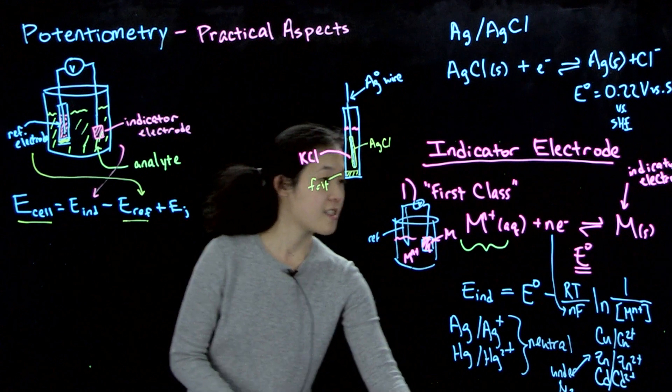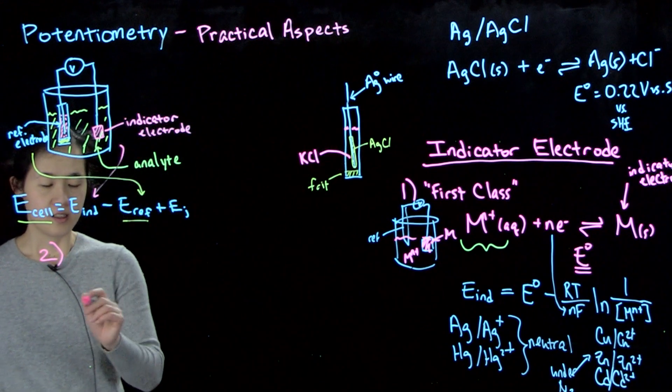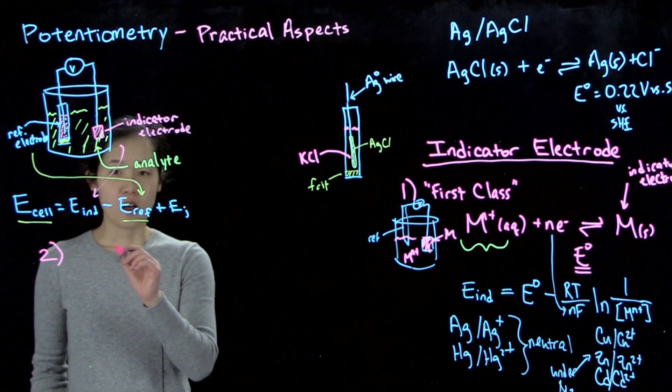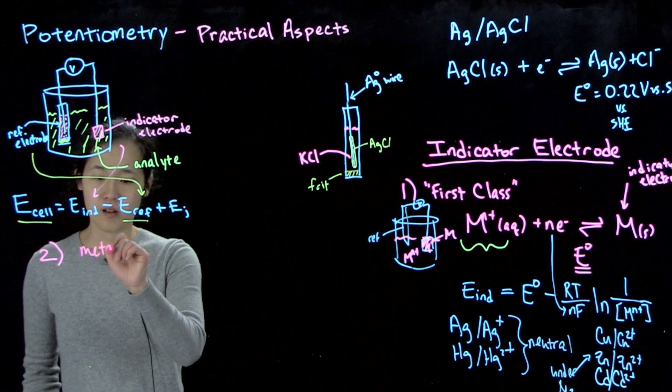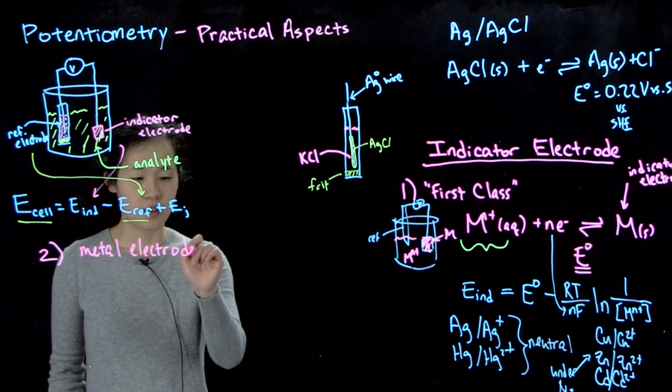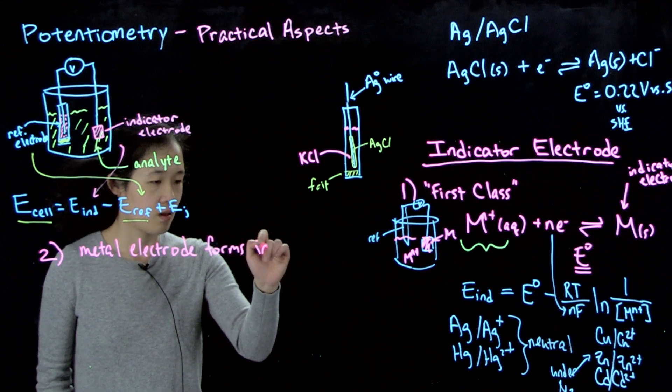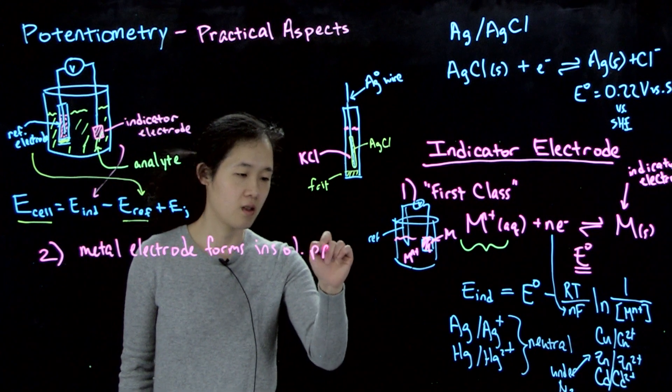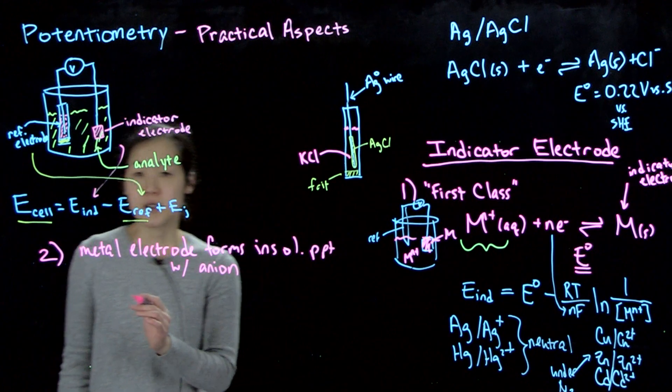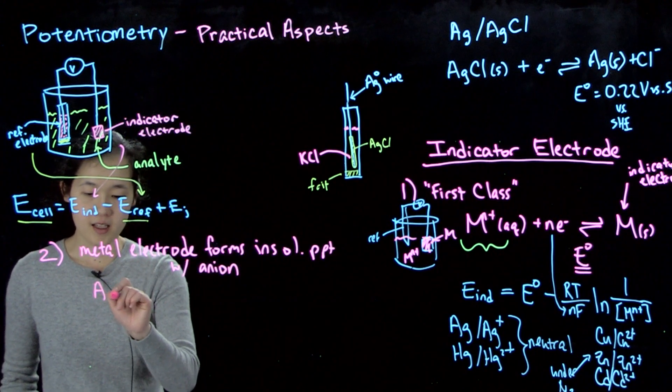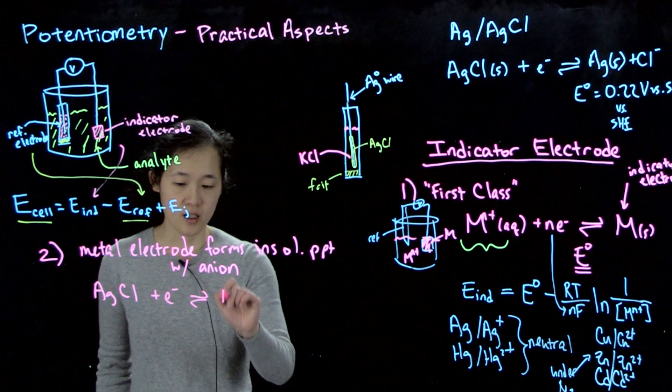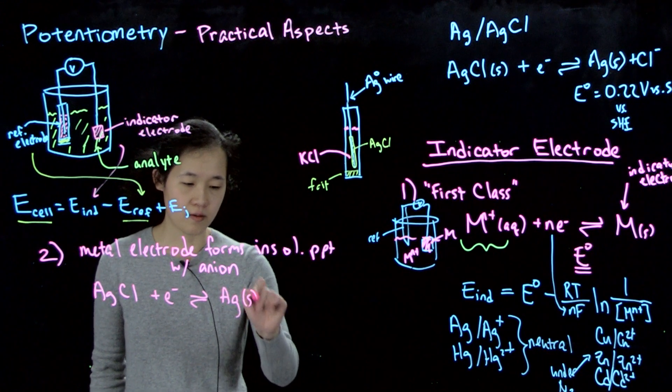So other types of indicator electrodes. So there's the so-called second class. Second class, which I won't write out. And then this one, we'll use our metal electrode to form some sort of insoluble precipitate with some sort of ion that we're detecting. Insoluble precipitate. So one example would be silver chloride and silver. So if we have, again, the same reaction. Silver chloride plus an electron will give us silver metal. So this is also a solid. And chloride ions.